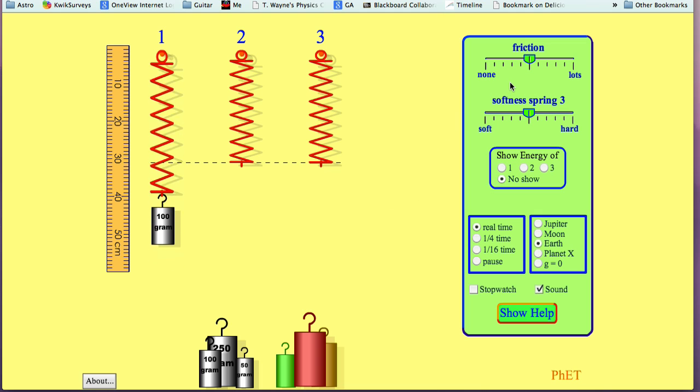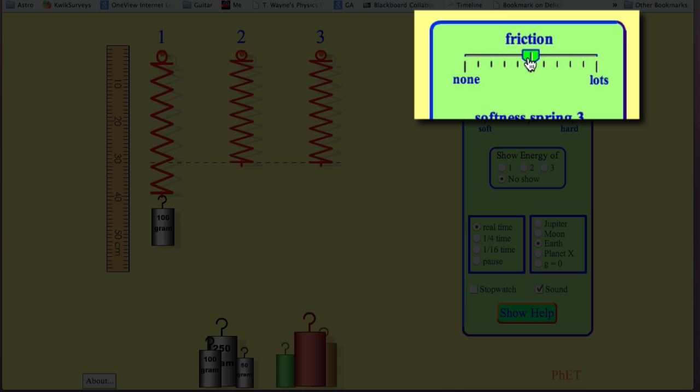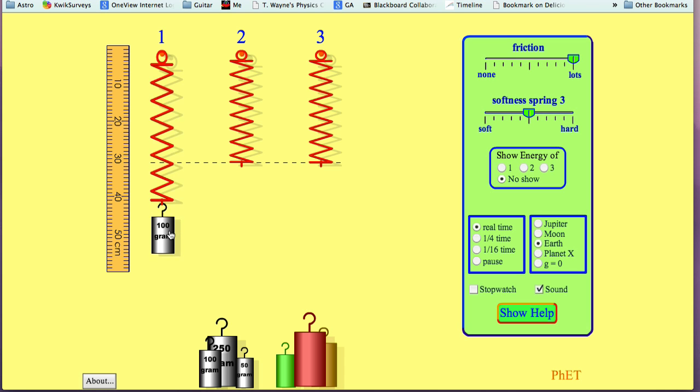And this one's bouncing up and down a lot, so I want to slow it down. I'm going to go over here where it says Friction and slide this over to where it says Lots. By sliding over to Lots, it'll slow down a lot more quickly. So now you can see when I drag it and let it go, I won't be wasting a lot of time watching it bounce up and down.